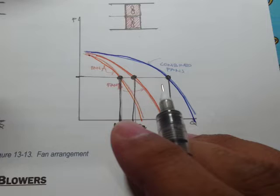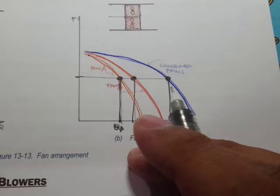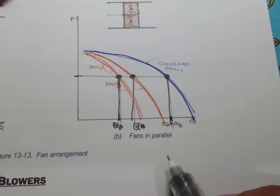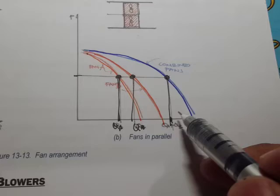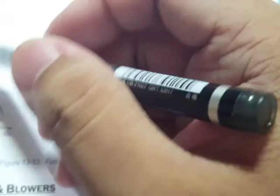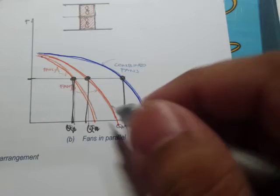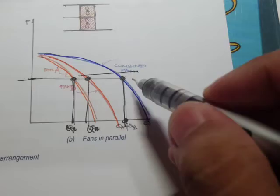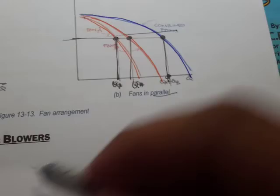In summary: if you want to increase pressure without changing flow rate, connect the fans in series. If you want to increase flow rate without changing static pressure, connect the fans in parallel.